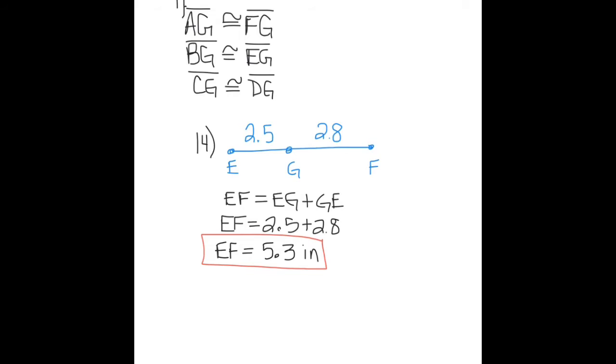Number 14: You're given the figure. You know that G is in between E and F, so the law of betweenness or segment addition means EF equals EG plus GE. EF equals 2.5 plus 2.8. I'm just using substitution. EF equals 5.3 inches. If you didn't use your units, if you forgot inches, make sure you add that when you're checking your homework. I'm making a point to say these things because I would take off a half a point on a quiz if you didn't label your units.